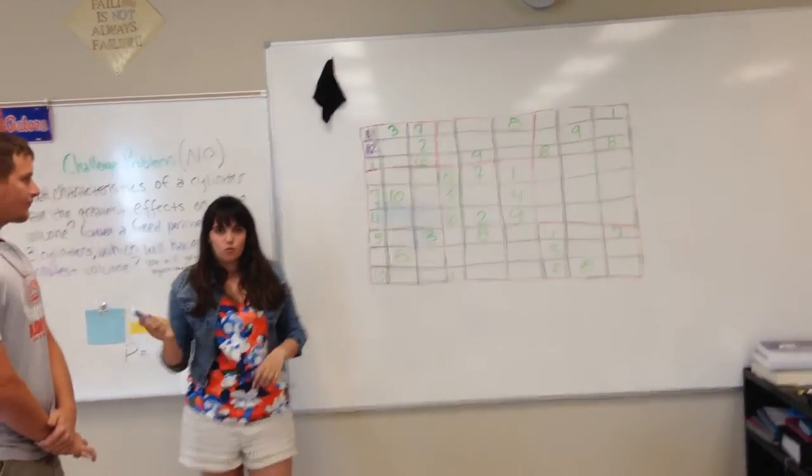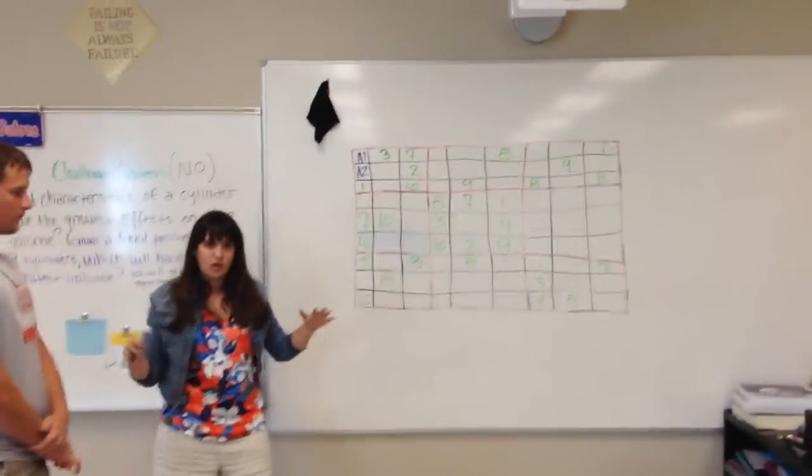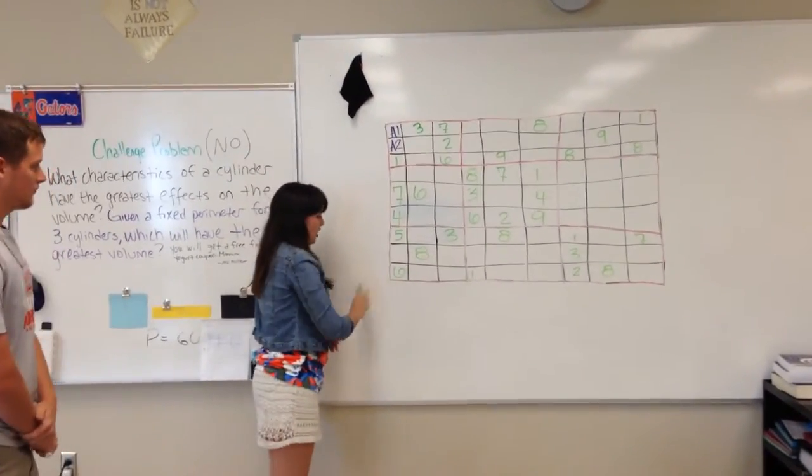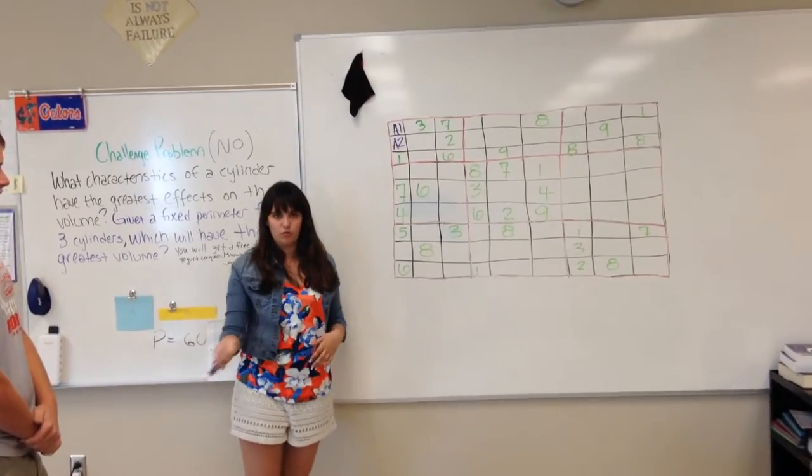If you add up the numbers in the range 1 through 9, you end up with 45. So this whole row should add up to 45.